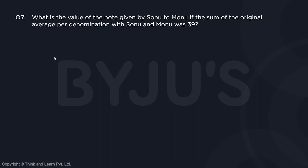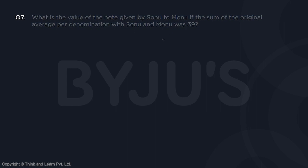Moving on to question number 7: what is the value of the note given by Sonu to Monu if the sum of the original average per denomination with them was 39? The original average with Sonu was A and with Monu was B, and their sum was equal to 39. We also know that B minus A equals 3.